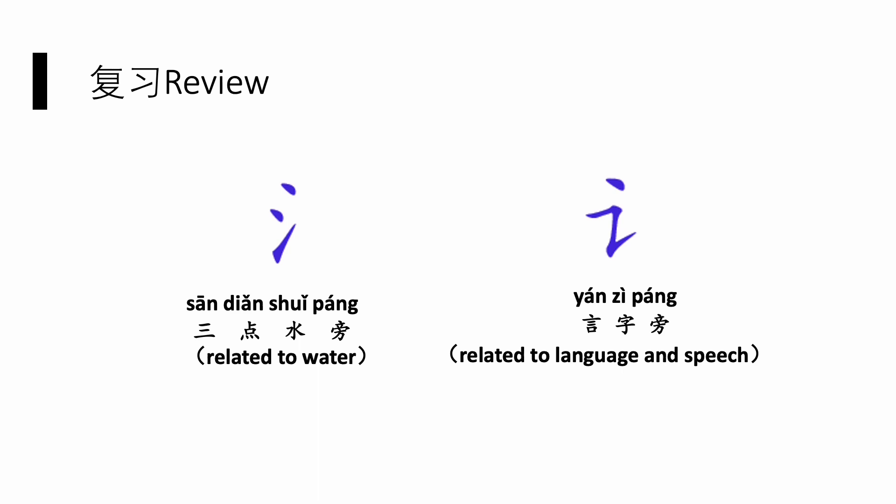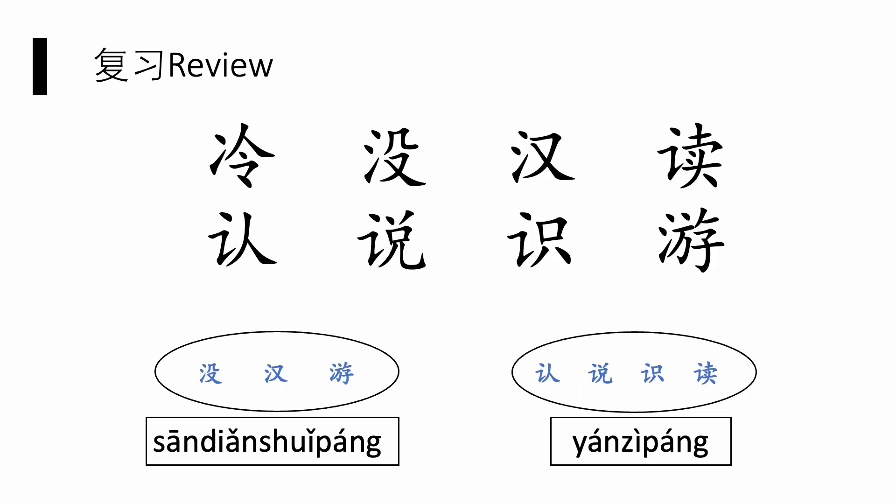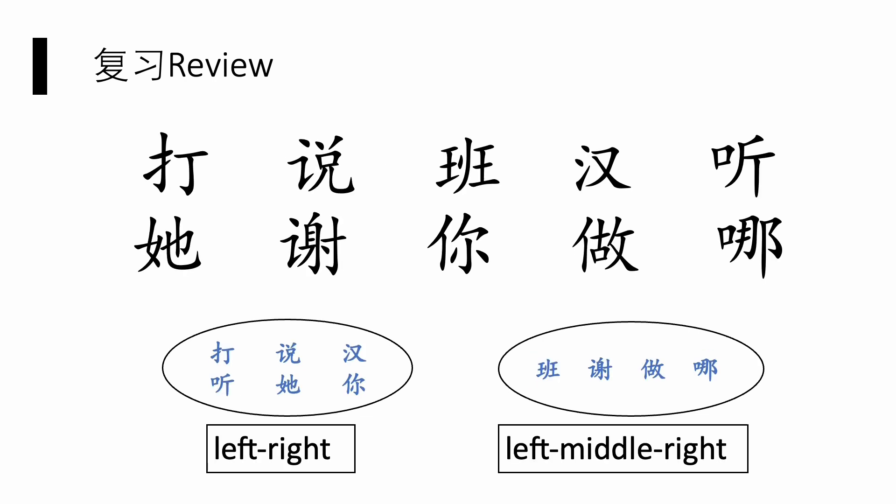Radicals are really helpful in our Chinese learning. If you forget, please review them in time. There are some examples about these two radicals — try to see if you can still tell them apart. We also learned two structures in Chinese characters: the 左右结构 and 左中右结构. They have similarities but also differences. Remember to distinguish them according to their characteristics.